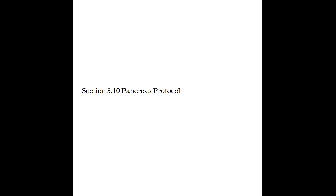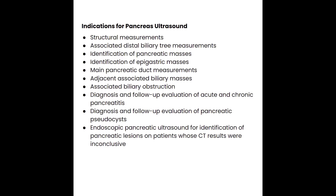Let's wrap up with Section 5.10, the Pancreas Protocol. The pancreas is typically included in the right upper quadrant ultrasound and the abdomen complete ultrasound. There are multiple indications for ordering an exam that includes the pancreas: getting measurements if another imaging modality showed it was large; looking for masses involving the pancreas itself or the biliary tree; looking for any obstruction along the biliary or pancreatic ductal path; using ultrasound to diagnose and follow up acute or chronic pancreatitis; diagnosing or following up pancreatic pseudocysts, which are pockets of digestive enzymes outside of the pancreas. We can also perform endoscopic pancreatic ultrasounds.